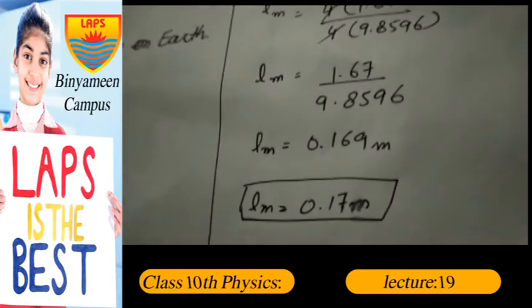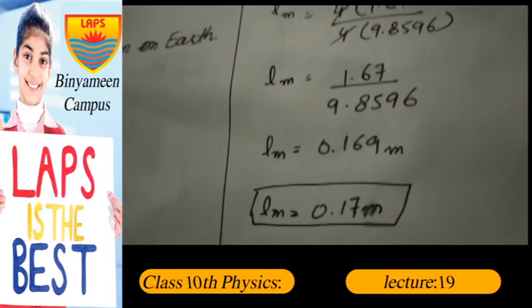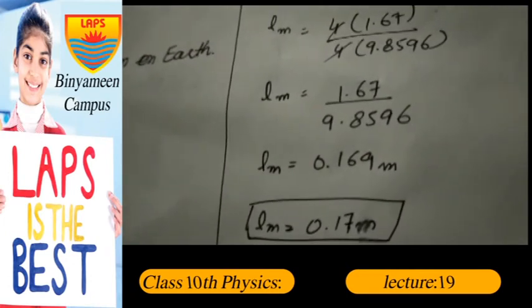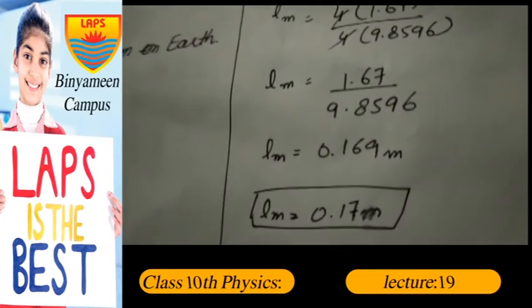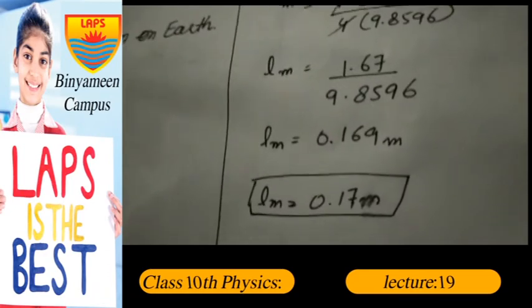Now you can also write it as: the length of the pendulum on the Moon is equal to 0.17 meters.